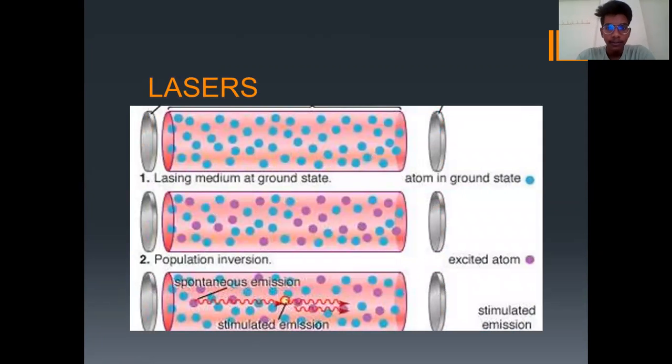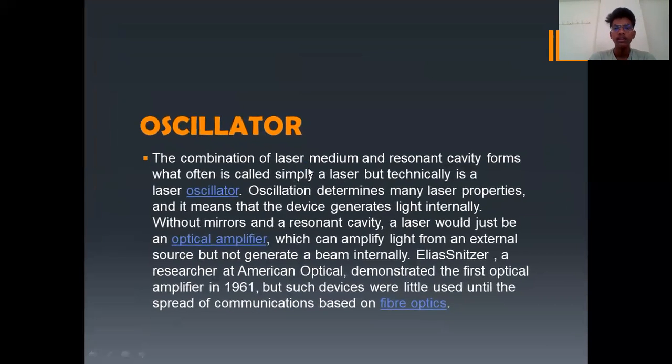Coming to the diagram, this is a partially reflected mirror and this is a fully reflected mirror in which the lasing medium is at ground state. When these electrons collide with each other, they form population inversion. The population inversion causes spontaneous emission and stimulated emission to occur, and then the light passes. The laser light passes outside of the mirrors.